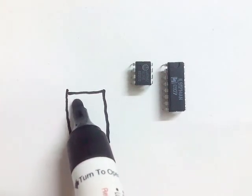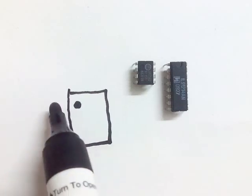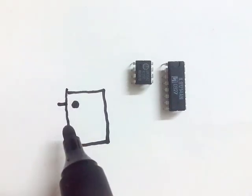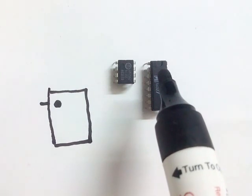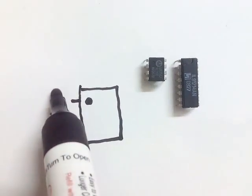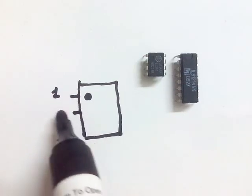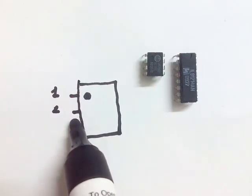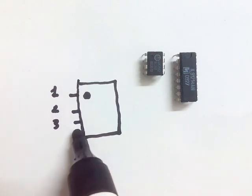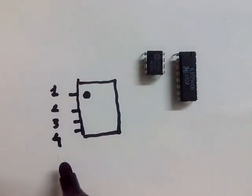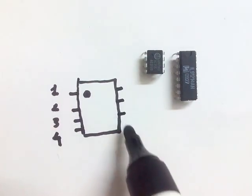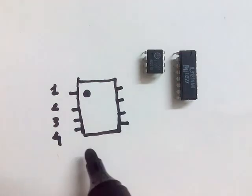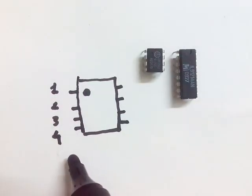For this 8-pin IC, we will draw the pin diagram. The circular mark indicates pin number one — the left-hand side pin of the mark. Even in the case of the semi-circular mark, the same applies: this is pin number one. The next one is pin number two, then pin number three, and the last one on this side is pin number four.